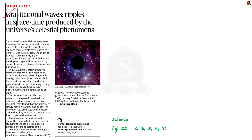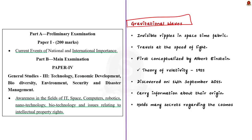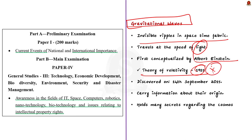This article talks about gravitational waves. In this discussion, let us understand what gravitational waves are, how they are formed, how they can be detected, and what are their effects on Earth. Gravitational waves are invisible ripples in the space-time fabric which travel at the speed of light. They were first conceptualized by Albert Einstein in his theory of relativity in 1915. But gravitational waves were discovered exactly after a century — on 14th September 2015. These gravitational waves contain large amounts of information about the cosmos as well.